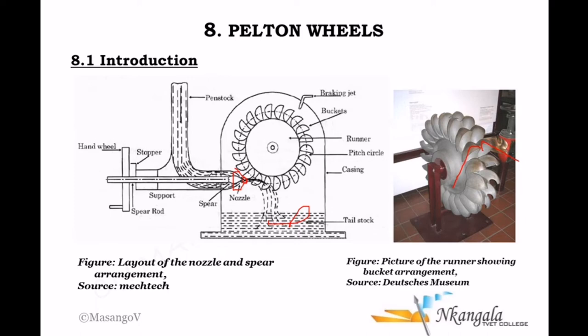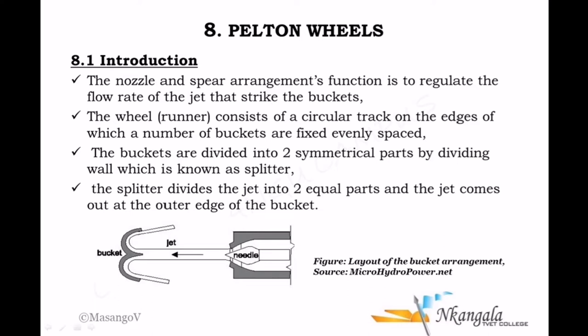The needle system controls the flow rate. When you pull back the needle, there is a high flow rate; when you push the needle forward, there is a smaller flow rate, though velocity may increase. When looking at the bucket from the top, it is designed with a splitter in the center. The jet of water is fired at the bucket and is split in two directions. This is how the buckets in a Pelton wheel operate.